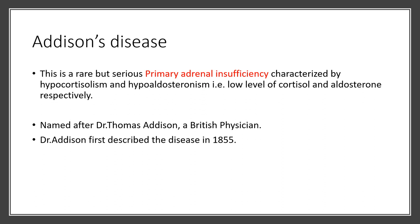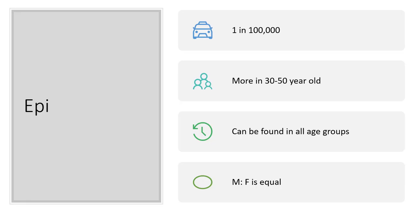Dr. Addison was the first physician who described this disease in 1855. Epidemiologically, 1 in 100,000 people will come down with Addison's Disease — you can see that it's not very common. It is prevalent among people between the ages of 30 and 50 years old, though it can be found in all age groups, and the male-to-female ratio is equal.